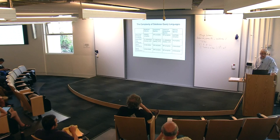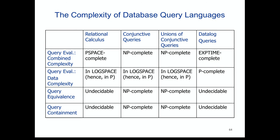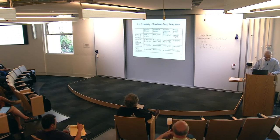Closing summary: comparing unions of conjunctive queries to Datalog. The price of adding recursion: combined complexity rises from NP-complete to exponential-time complete; data complexity rises from log space to polynomial-time complete; and query equivalence and containment return to undecidability, as in full relational calculus. That is the price of recursion. Thank you very much.